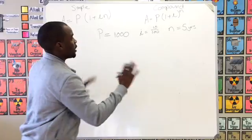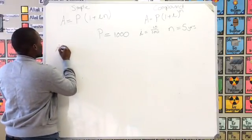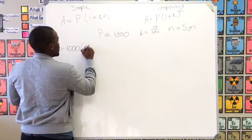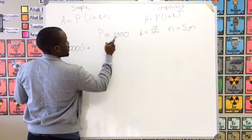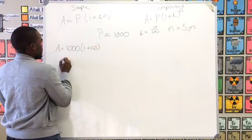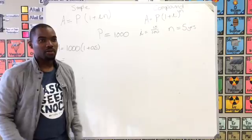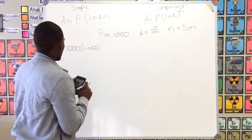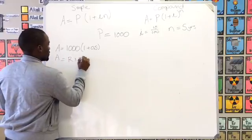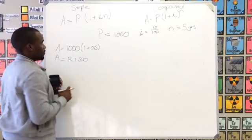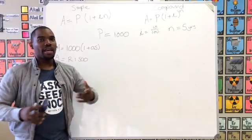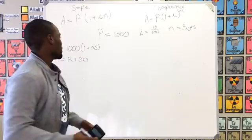Looking at simple interest: A = 1000 × (1 + 0.1 × 5) = 1000 × 1.5, which gives us one thousand five hundred rand. So basically over the five-year period you've gained 50% interest on your principal amount.